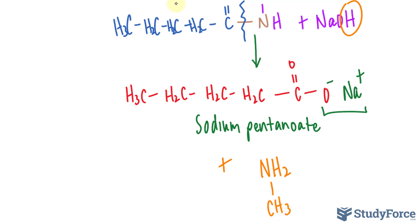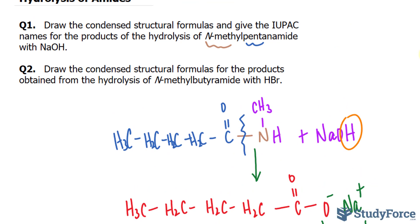This molecule is called methanamine. That's the IUPAC name for both. Let's move on to question two: draw the condensed structural formulas for the products obtained from the hydrolysis of N-methylbutyramide with hydrobromic acid.